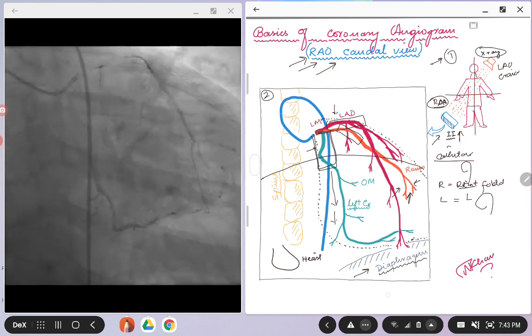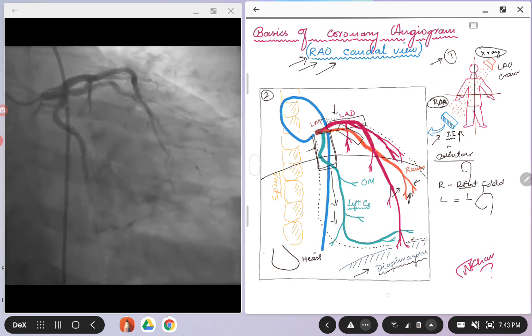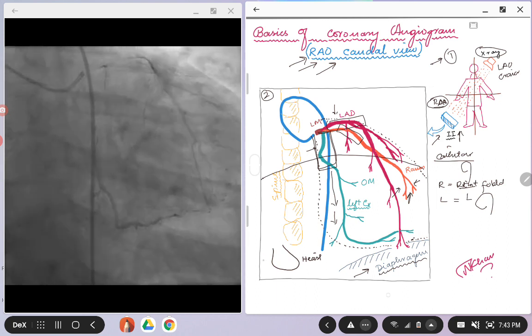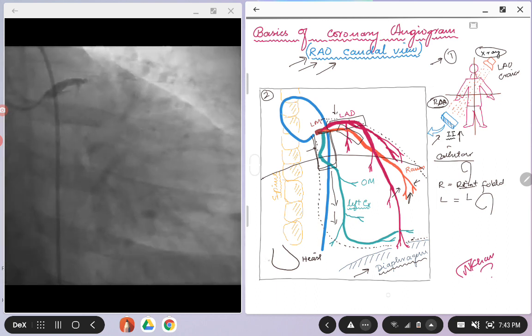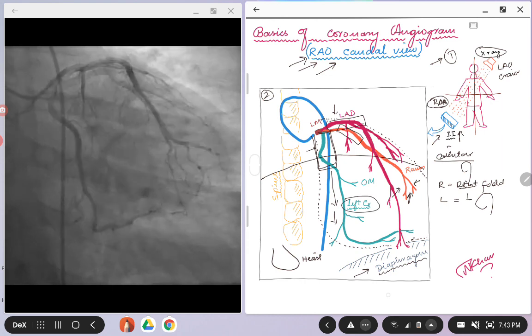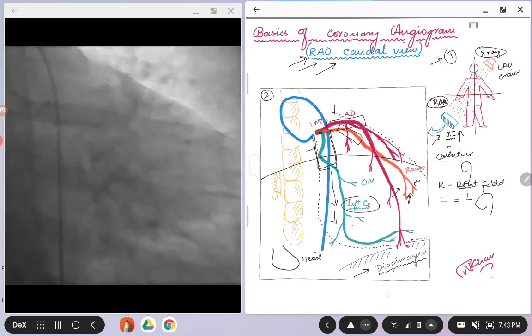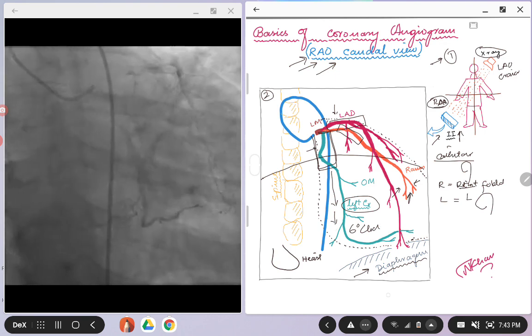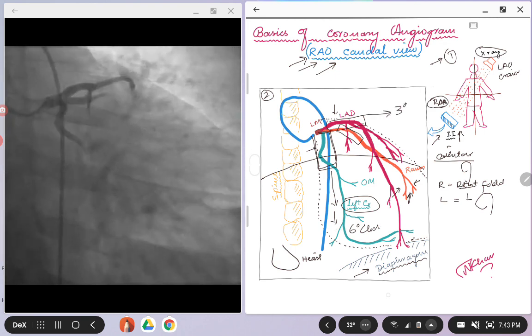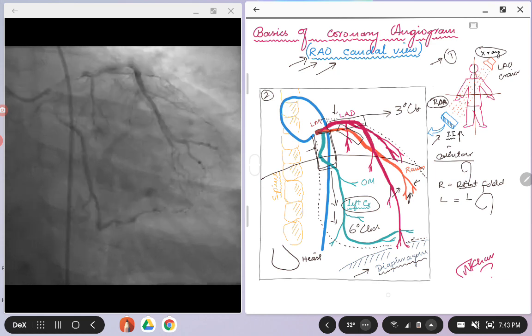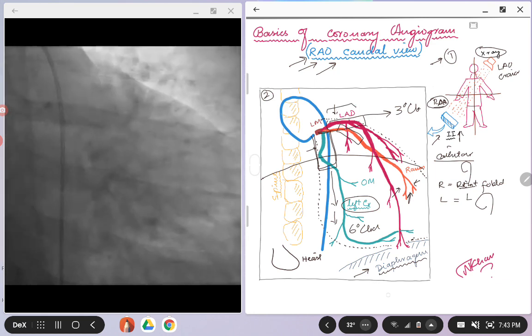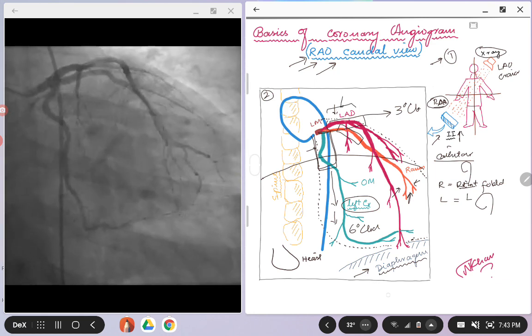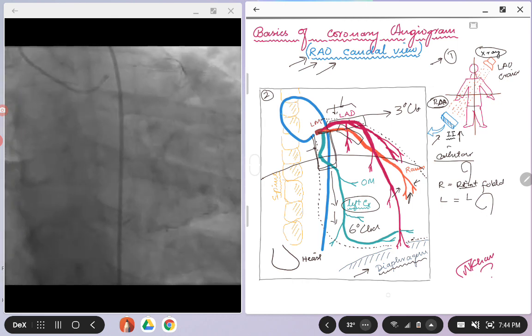As we know, the caudal views are good for looking at the left circumflex, and the artery that will be in the middle of the screen, very prominent, will be your left circumflex. As in this case, probably going in a six o'clock position, and then the LAD is probably going around like a three o'clock position.